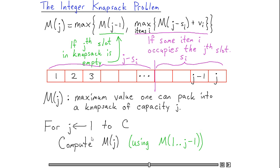Now if the jth slot in my optimal solution is occupied by some item, I'm not sure which item that is, so what I want to do is I want to maximize over all the possible items the value that I would get if my knapsack were to end in that particular item. So to recap,